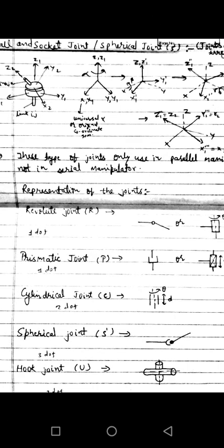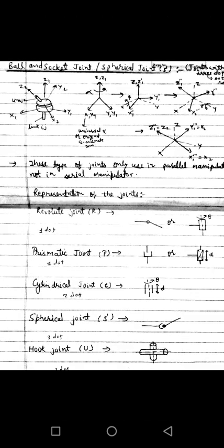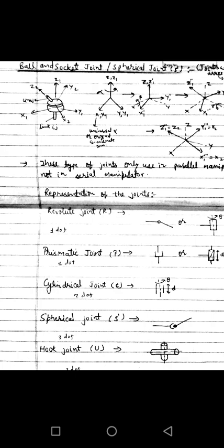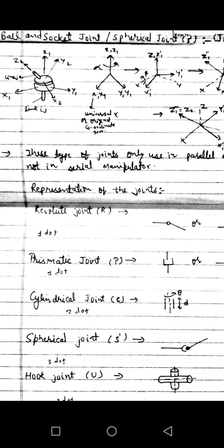The next joint is the ball and socket joint or spherical joint. It is denoted by capital S. The diagram shows the spherical joint, which has 2 links. The input link is IJ and the output link is JK.